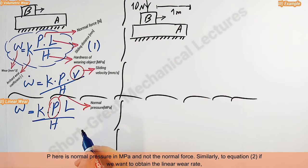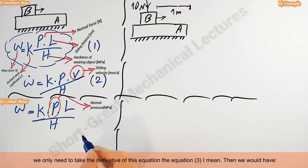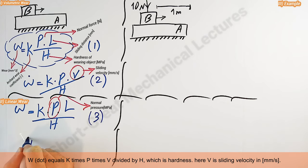Similarly to equation 2, if we want to obtain the linear wear rate, we only need to take the derivative of this equation, the equation 3 I mean. Then we would have W dot equals K times P times V divided by H, which is hardness. Here V is sliding velocity in millimeter per second.